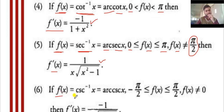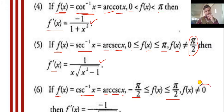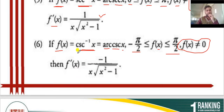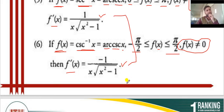Formula 6: if f(x) is equal to cosec⁻¹x, also written as arc cosec x. The value of x in this function varies from minus π/2 to π/2, but its value is not equal to 0. This is because cosec(0) is undefined. So its value is never equal to 0. The differentiation f'(x) of cosec⁻¹x is minus 1 upon x√(x² - 1). This is similar to sec⁻¹x, but with minus 1 in the numerator.